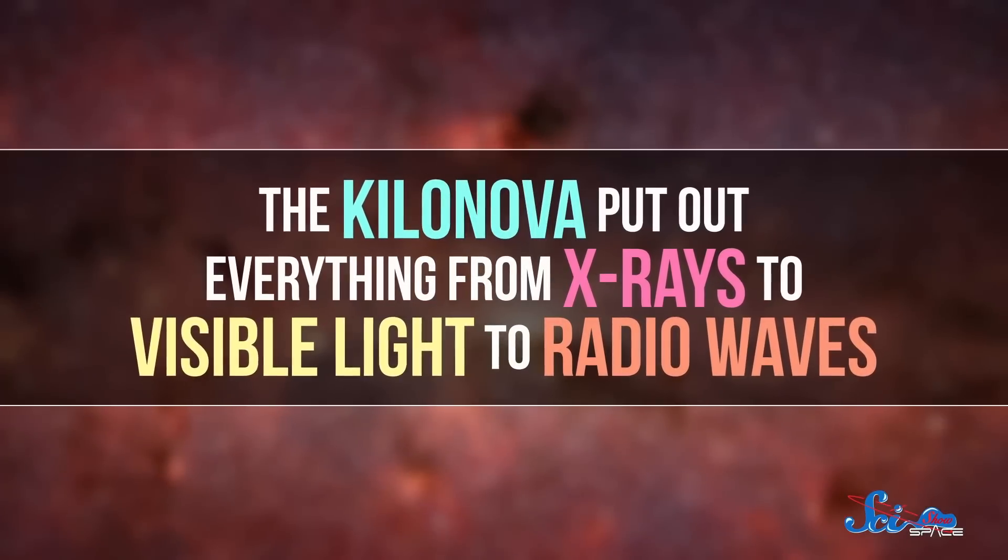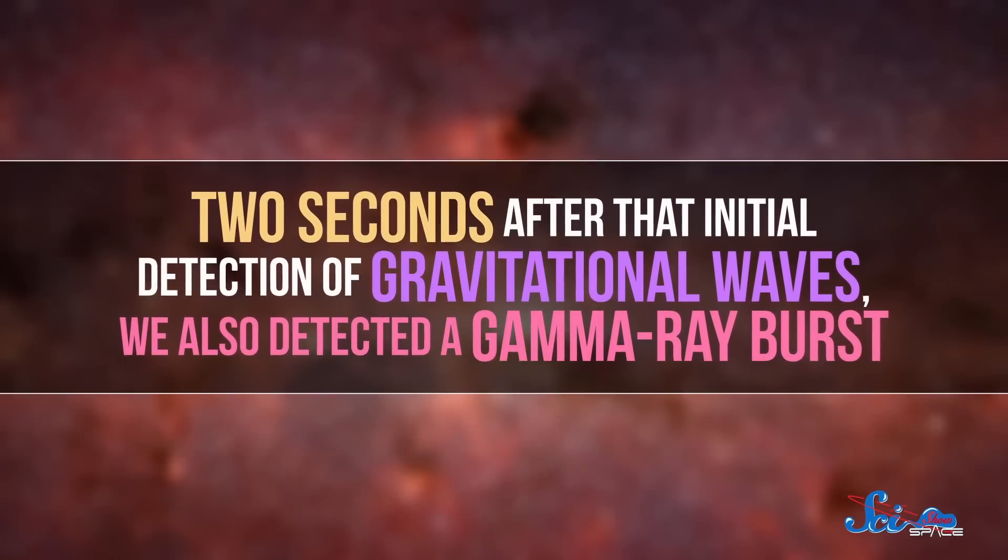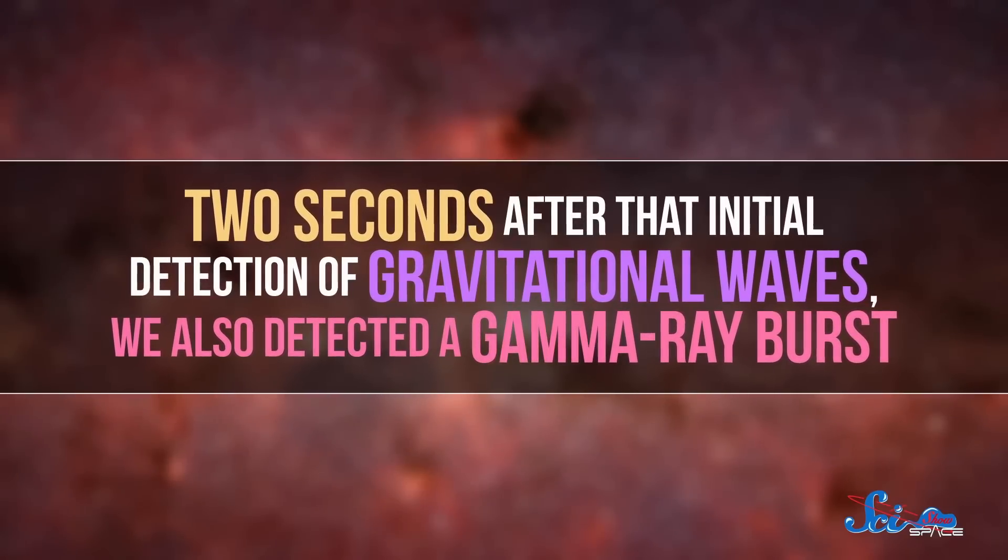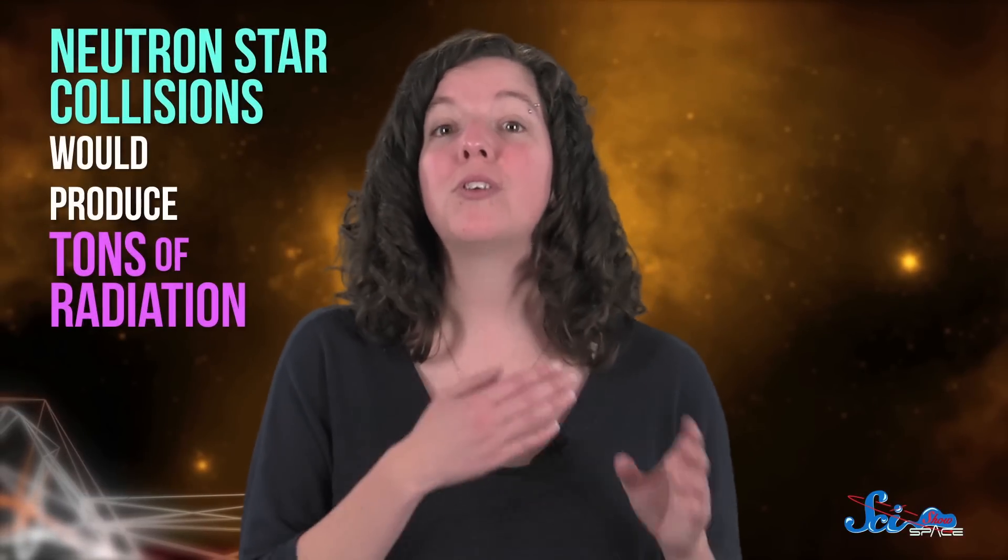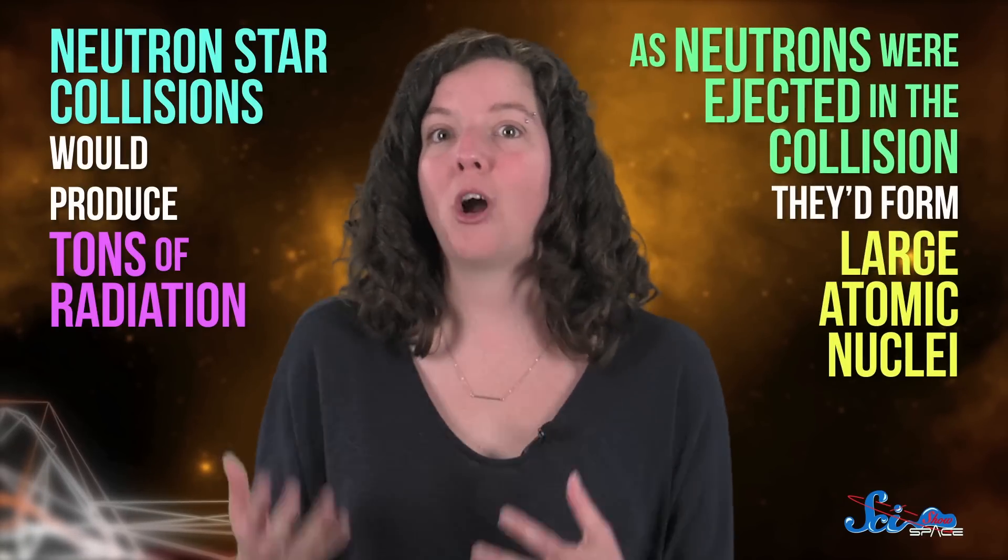The kilonova put out everything from x-rays to visible light to radio waves, and two seconds after that initial detection of gravitational waves, we also detected a gamma ray burst. Astronomers had predicted that neutron star collisions would produce tons of radiation because as neutrons were ejected in the collision, they'd form large atomic nuclei. Some of those nuclei would be radioactive and decay right away, producing radiation. And that's exactly what we saw!